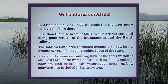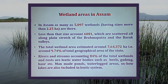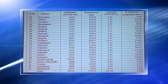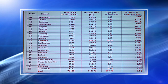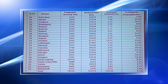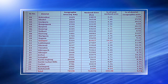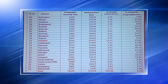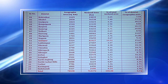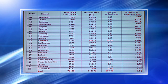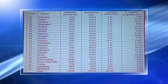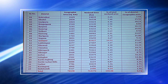The total wetland area is estimated at around 763,372 hectares, which is about 9.74% of the total geographical area of the state. Rivers and streams account for 84% of total wetlands, and the rest are Lentic water bodies such as Beels, Gadang, Houd, etc. Man-made ponds, waterlogged areas, and oxbow lakes are also included in the Lentic system. The wetland area and number of wetlands varies from district to district.